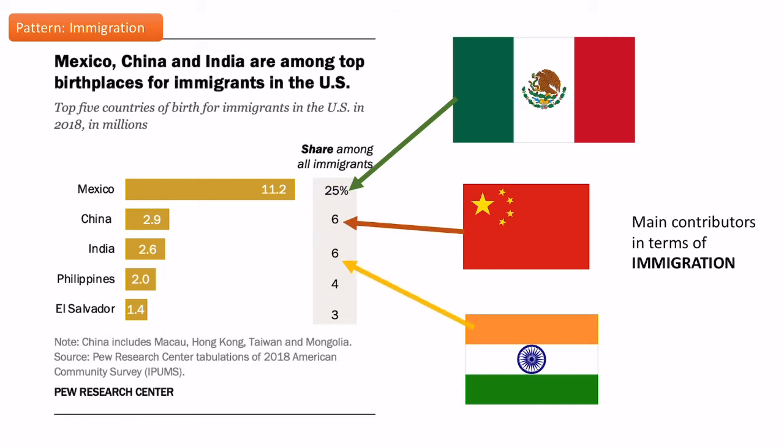Mexico accounts for 25% of immigrants and is the dominant source because there are very few intervening obstacles — it's very close. Chinese and Indians each account for around 6%. These figures will change with time.